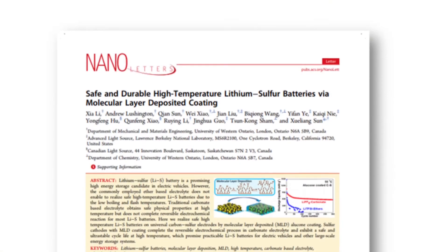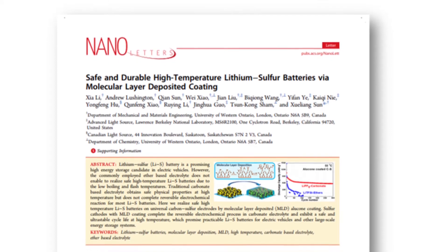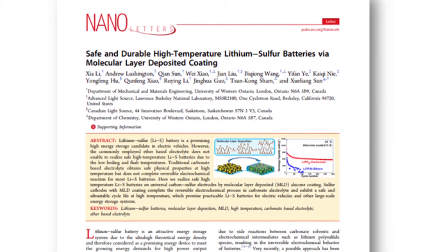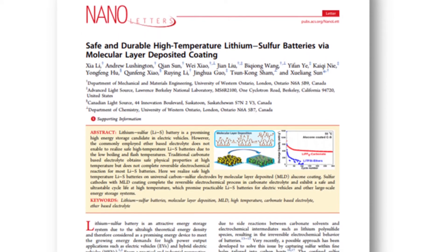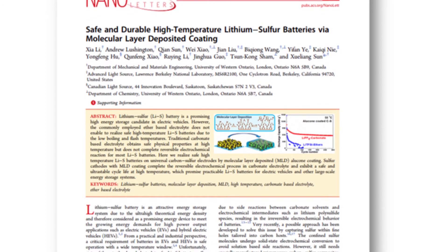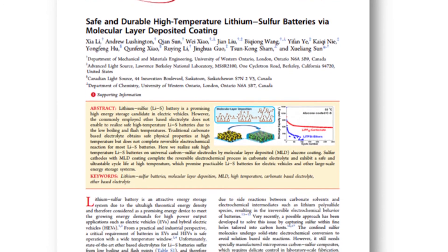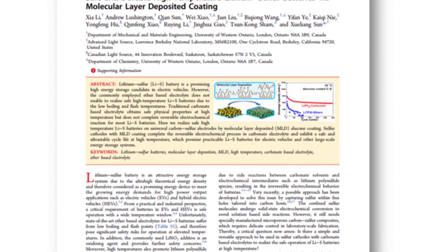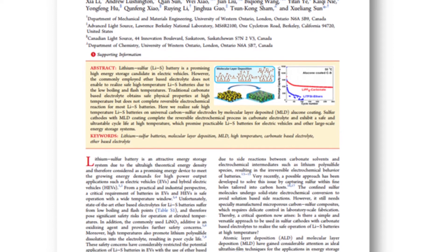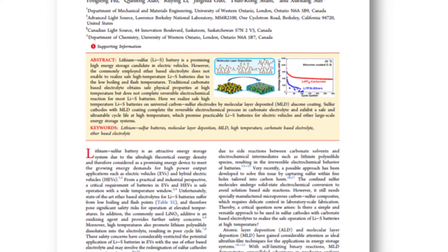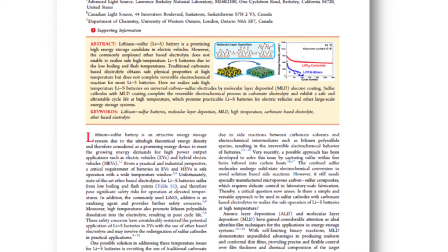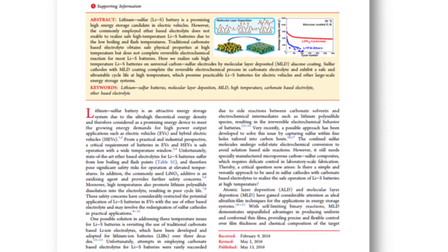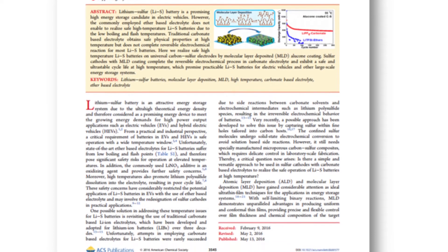Our group firstly demonstrated an alucone coating directly on the sulfur cathode, which can significantly improve the cycling stability and capability of the lithium-sulfur batteries. Particularly, it also can make the carbon-sulfur electrode work very well in the carbonate-based electrolyte at high temperatures.